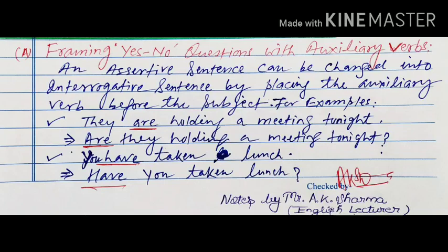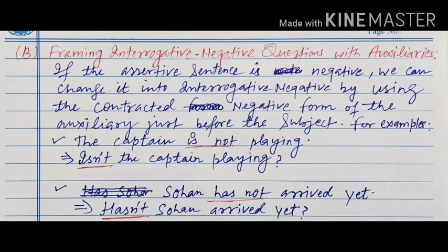For example: 'They are holding a meeting tonight' — we can make this interrogative as 'Are they holding a meeting tonight?' Similarly, 'You have taken lunch' becomes 'Have you taken lunch?' In this way, whichever auxiliary is already present, we place that auxiliary before the subject to form the question.